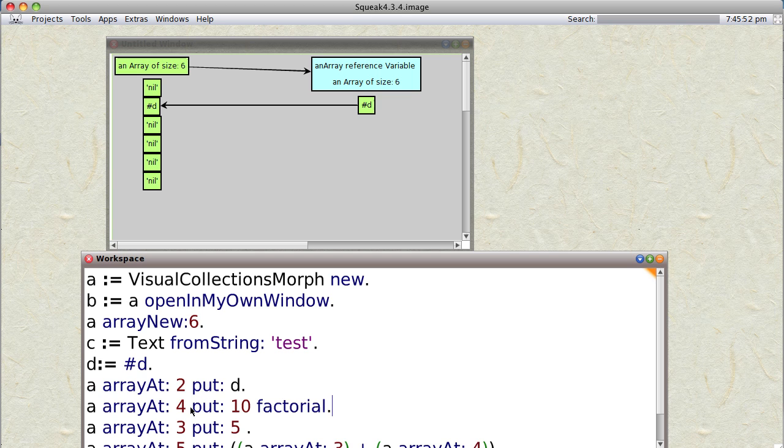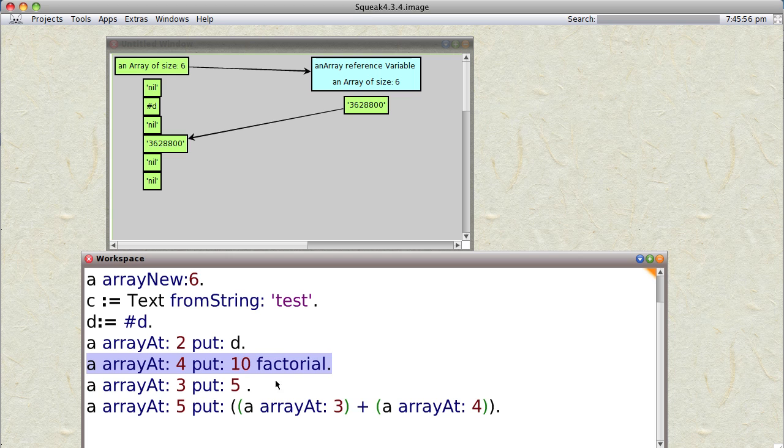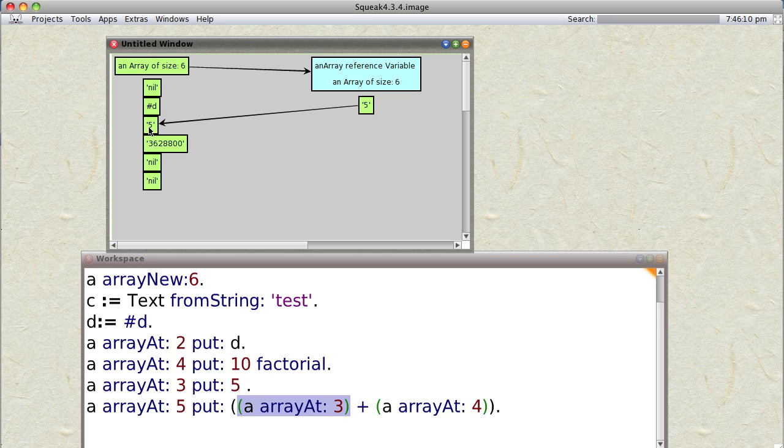Now we're going to put in the fourth slot 10 factorial, and sure enough you see it. And in the fifth slot we're going to put a five, and you can see the five went there. Actually it went into the third slot. Now at the fifth slot we're going to put the results of the addition array at 3 plus array at 4.